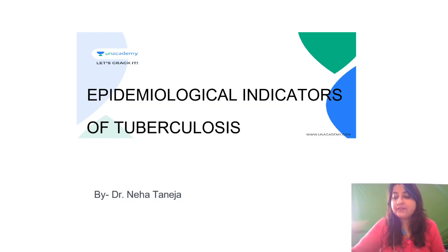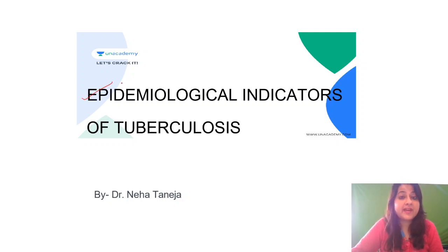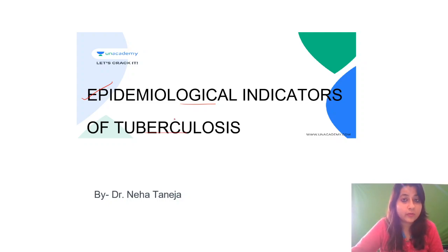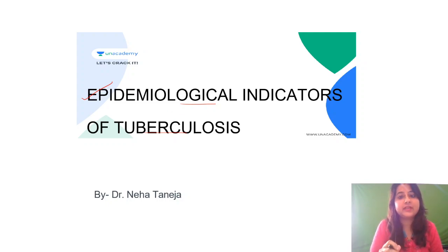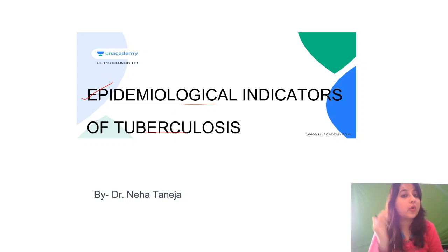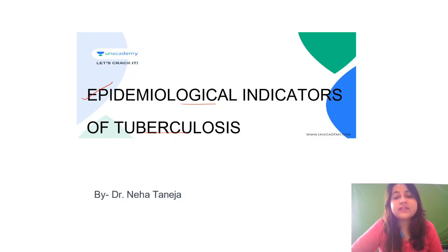Today I've come up with a very important video. It's a small video, but on a very important topic: epidemiological indicators of tuberculosis. It's a very confusing topic. Students ask a lot of questions about this, and trust me, one MCQ from the chapter of TB will definitely come in our entrance examinations — it could also be from this particular topic. For university examinations also, this question comes for five marks. So let us see what it is.